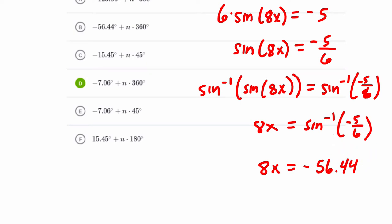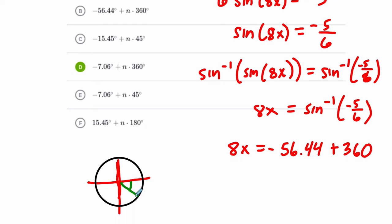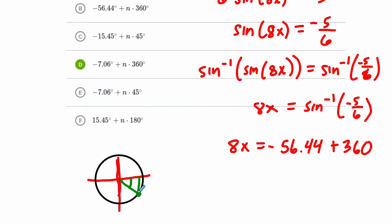But that will be true for any angle that's coterminal with negative 56.44 degrees. And that just means if I add 360 degrees to negative 56.44 degrees, I'm basically back at the same spot, and my angle has the same sine and cosine. For example, if I have a unit circle here, and you can imagine that negative 56.44 degrees is down here, about.